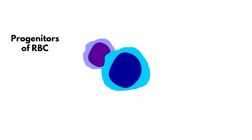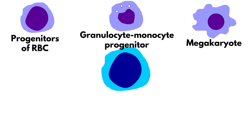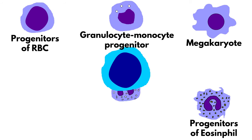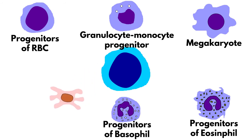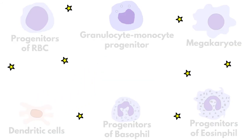Common myeloid progenitor cells give rise to progenitors of red blood cells, granulocyte-monocyte progenitors, megakaryocyte progenitors, progenitors of eosinophils, basophils, and dendritic cells. When the appropriate growth factors and cytokines are present, progenitor cells proliferate and differentiate into the corresponding cell type.